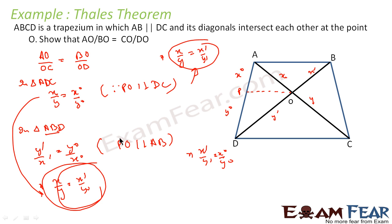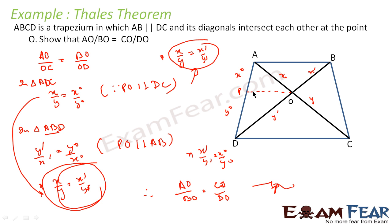So X by Y equals X-dash by Y-dash, which means AO by CO equals BO by DO, or equivalently AO by BO equals CO by DO. We did a reverse engineering here. AO by BO equals CO by DO didn't look intuitive, so I rewrote it as AO by CO equals BO by DO. For this I needed a parallel line, so I drew one at point P. I got two equations with X-not by Y-not as common, and merged them to get the result.